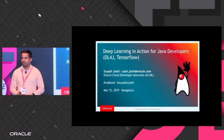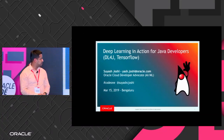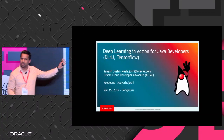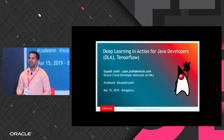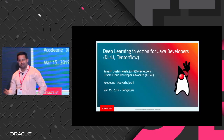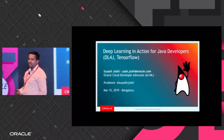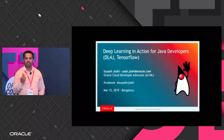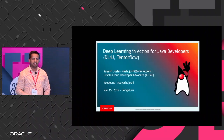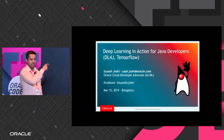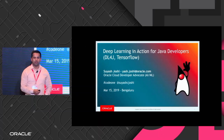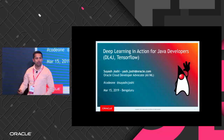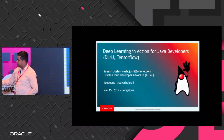Hi everyone. My name is Suyash Joshi. I work at Oracle as a cloud developer advocate. I'm originally from India, but I live in San Francisco now and work at our headquarters there. I support our teams working on machine learning and AI, and also on OCI, our cloud infrastructure services.